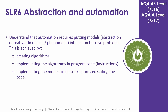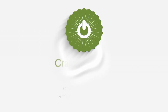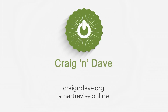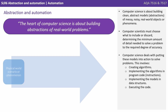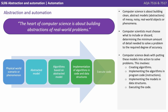In this video we look at automation. Computer science is all about building clean, abstract models of messy, noisy real-world objects or phenomena. Computer scientists must choose what to include or discard, determining the minimum amount of detail needed to solve a problem to the required degree of accuracy. Computer science deals with putting these models into action to solve problems.